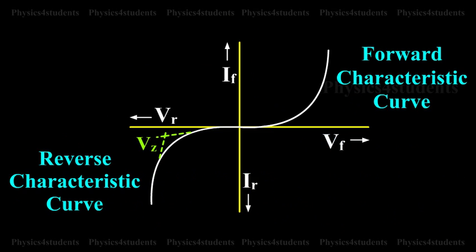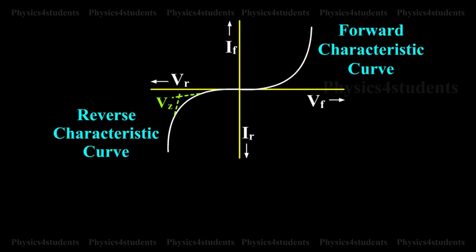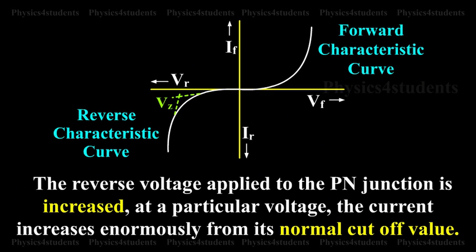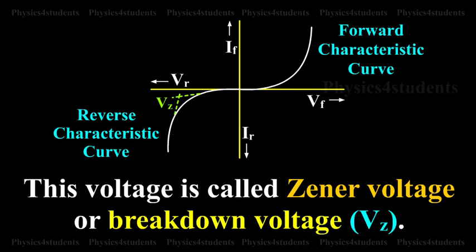The VI characteristic curve for the Zener diode is shown in animation. It can be seen from the figure that as the reverse voltage applied to the PN junction is increased at a particular voltage, the current increases enormously from its normal cut-off value. This voltage is called Zener voltage or Breakdown Voltage VZ.